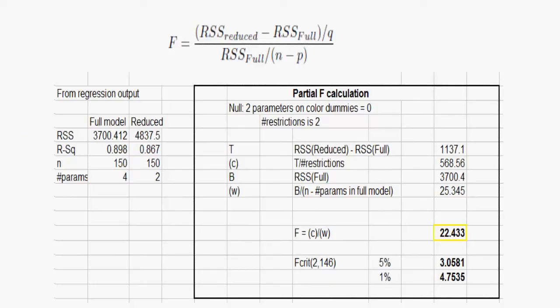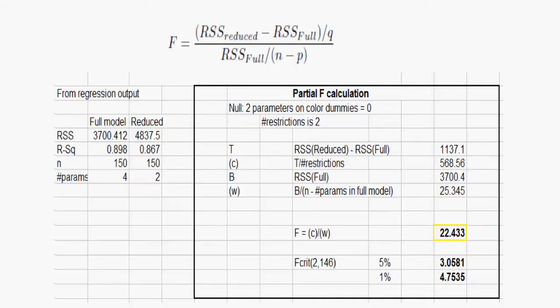Here's the calculation based on RSS. The stat comes to just over 22 and exceeds the critical value at the 5% level and indeed even at the 1% significance level. So we conclude there is very strong evidence to reject the null that the factor is not significant, i.e., there is evidence to retain it. Note the degrees of freedom on the F-table to find the critical value. So 2 here corresponds to the number of parameters being tested, and 146 is the number of observations minus the number of parameters in the full model including intercept. This is 150 minus 4.